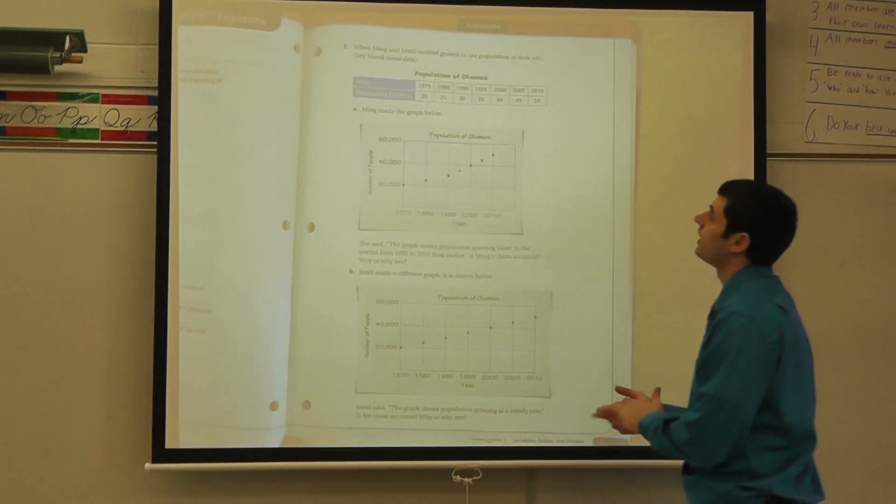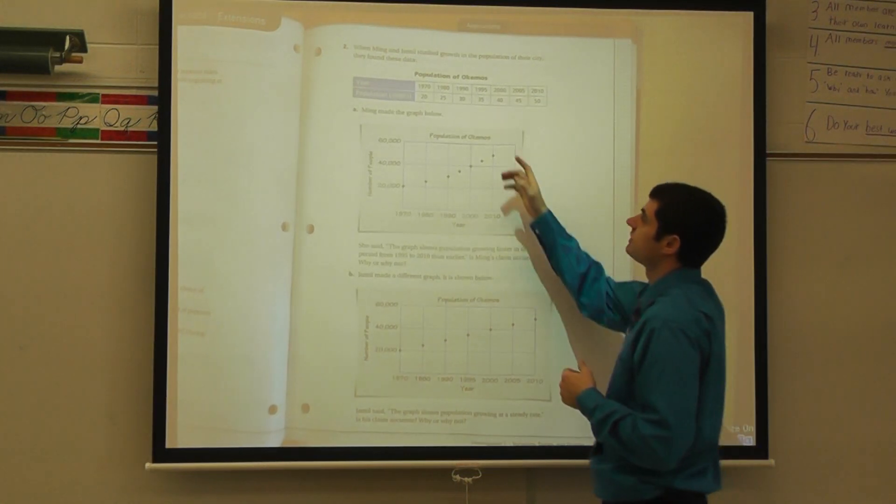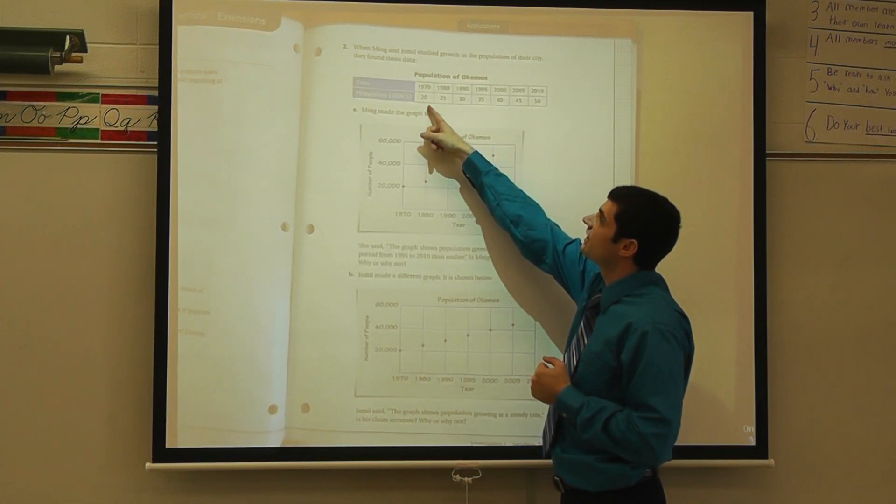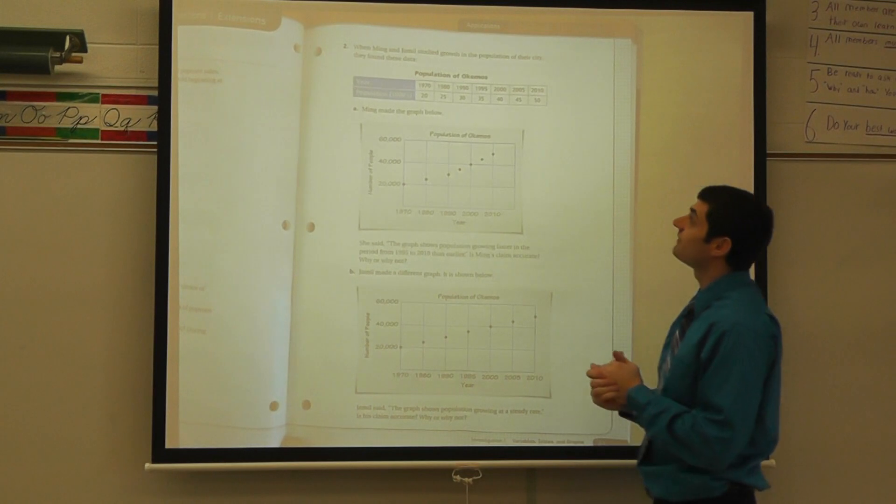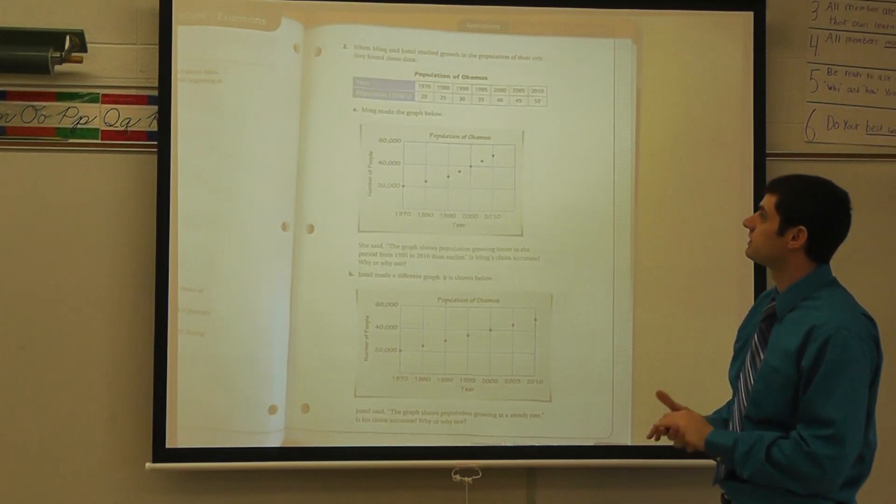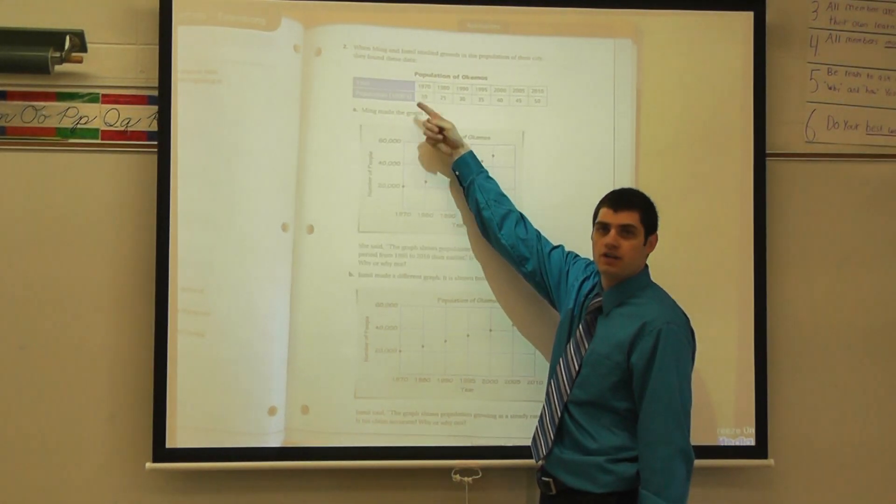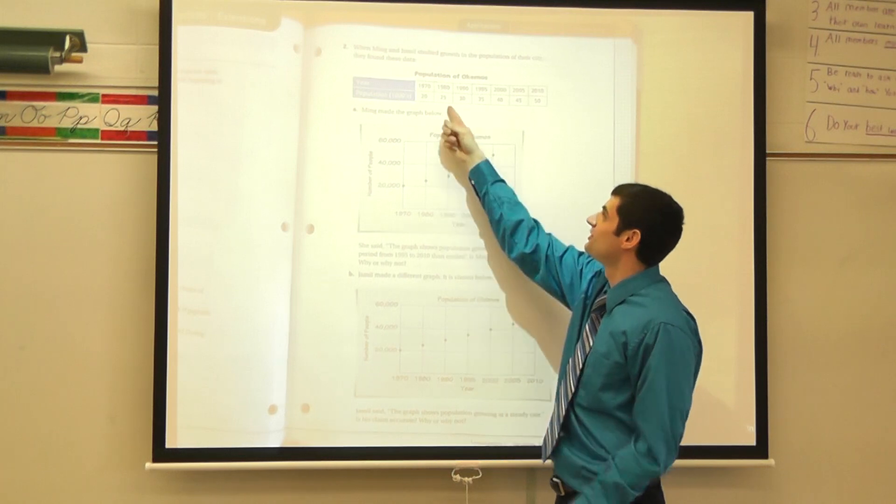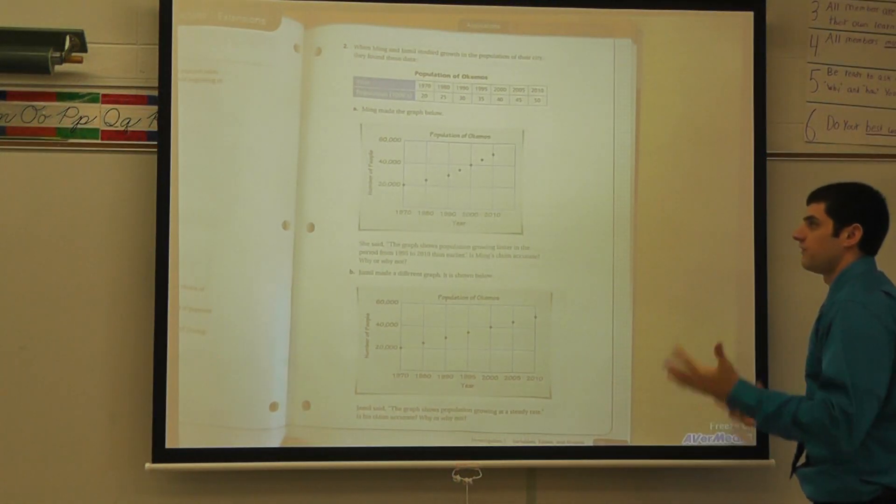It says when Ming and Jamil studied growth in the population of their city, they found these data. It says population of Okemos, and that tells you the year, and it goes 1970, 1980, 1990, 95, 2000, 2005, 2010. It says population in the 1000s. So when I see 20 there, that tells me 20,000, 25,000, 30,000, and so forth, all the way through to 50.